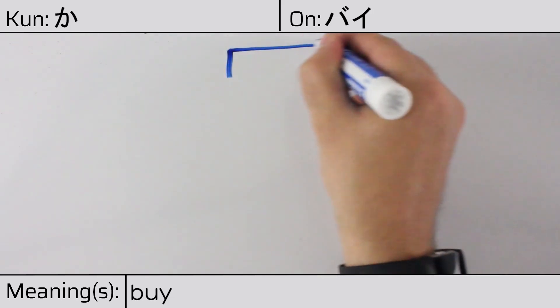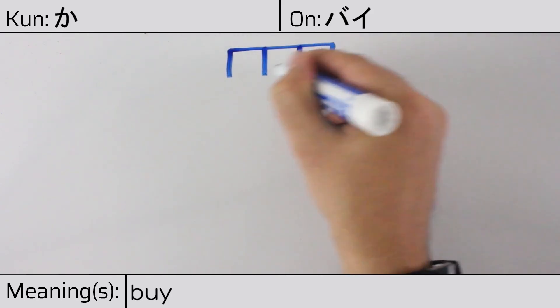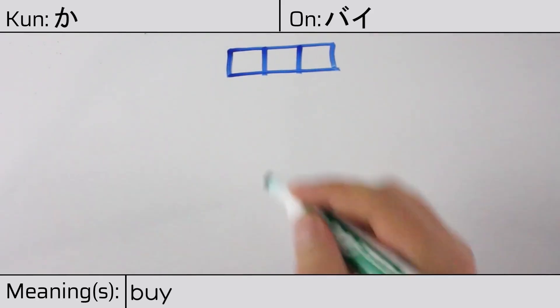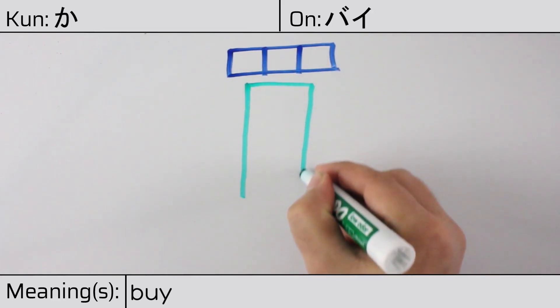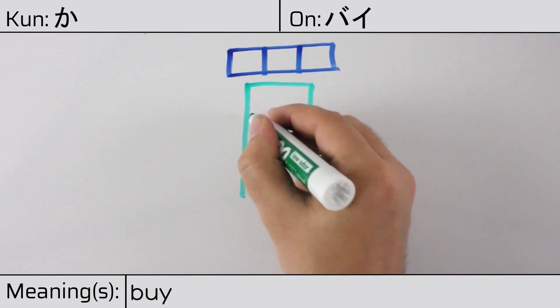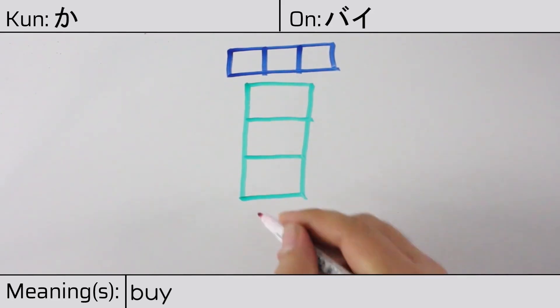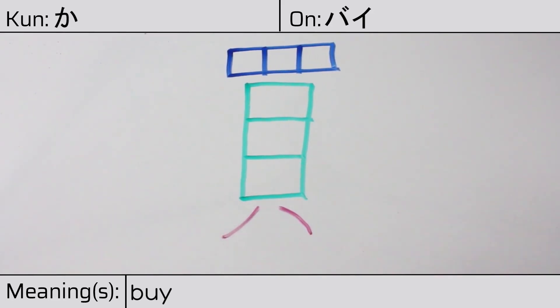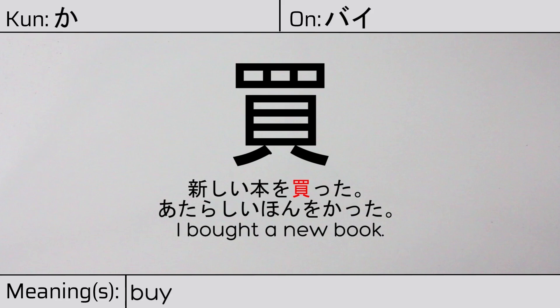This character is made up of the following radicals or parts: bag or net at the top, followed by shell kai — property or wealth at the bottom. You can remember this kanji by the following hint: when shopping, one has a string bag and money. Our example sentence is: Atarashii hon wo katta — I bought a new book.